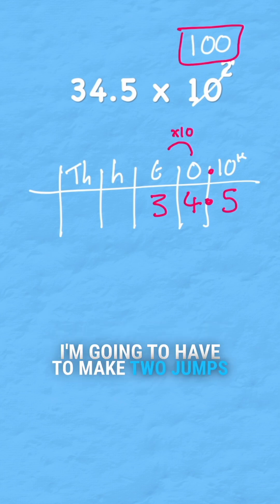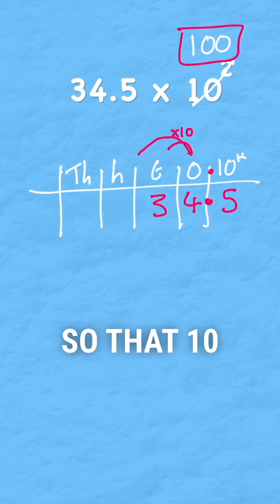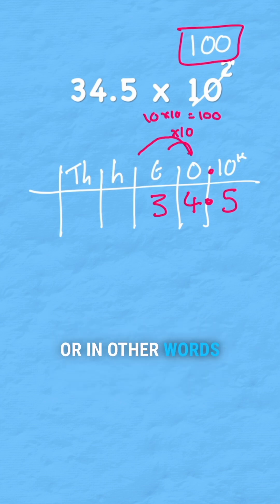So if it's times 100, I'm going to have to make two jumps, so that 10 times 10 equals the 100 I'm looking for. Or in other words, 10 to the power of 2 means I'm moving two columns.